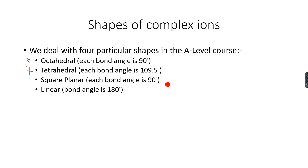I'll make a square and give an example of a square planar complex ion. Let's try the condensed form first.